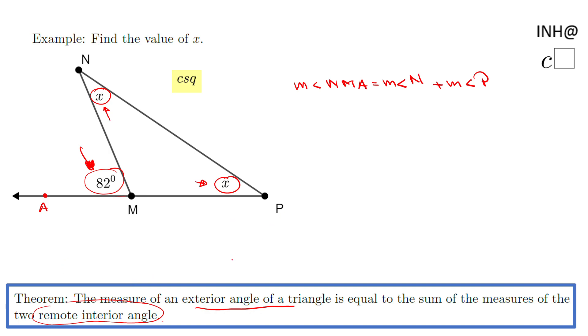The theorem states that the measure of an exterior angle of a triangle is equal to the sum of the measure of the two remote interior angles. Now angle NMA is 82 degrees, angle N is x, and angle P is x. So we have an equation. Now from geometry, we move to algebra.